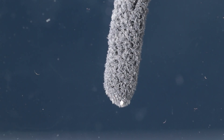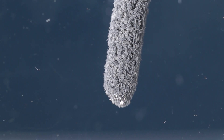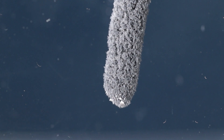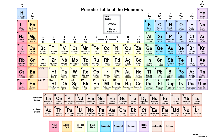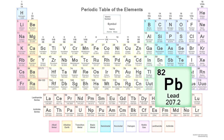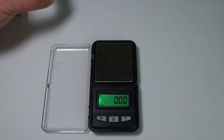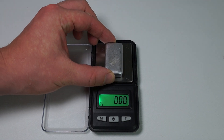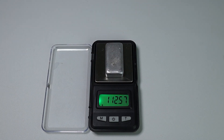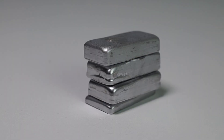Hello everyone! Today I'll tell you about the metal lead. Lead is pretty much at the bottom of group 4 of the periodic table of chemical elements. Of all the non-radioactive elements, this metal has almost the biggest atomic mass.